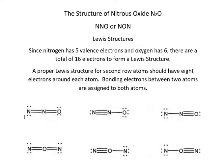Hello. Today I'm going to discuss the structure of nitrous oxide, N2O. One aspect of this discussion is whether it's NNO or NON — is it the symmetric or the non-symmetric structure? I want to show how using Lewis structures and a concept of formal charge, you can come out with the correct structure.